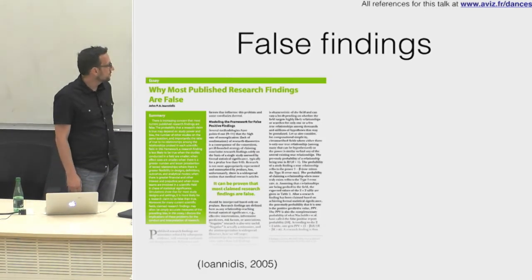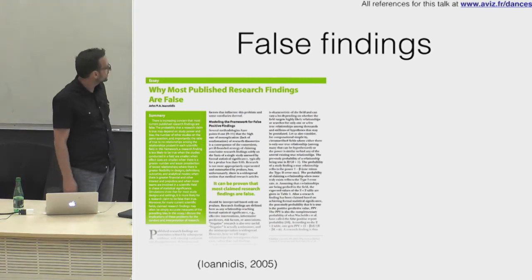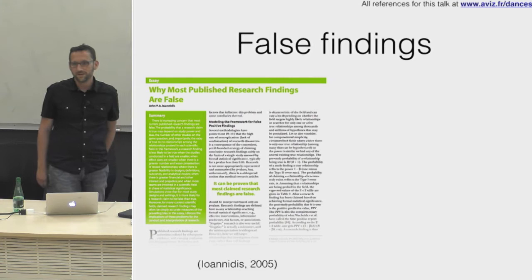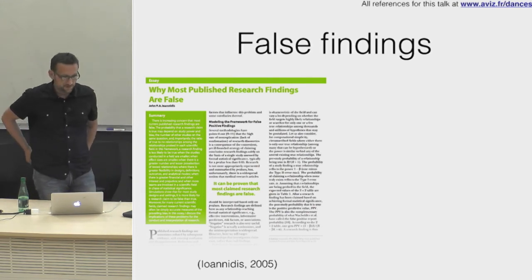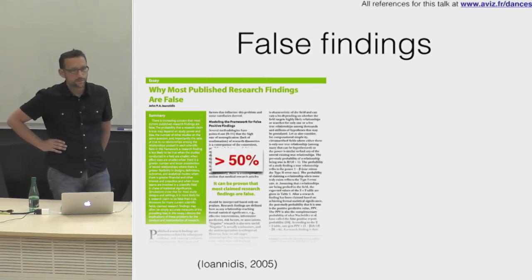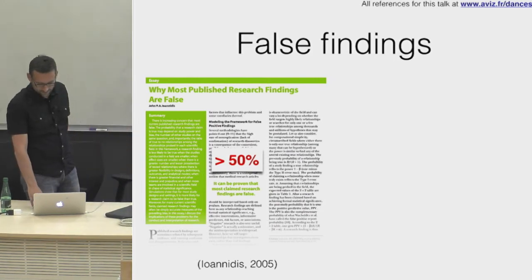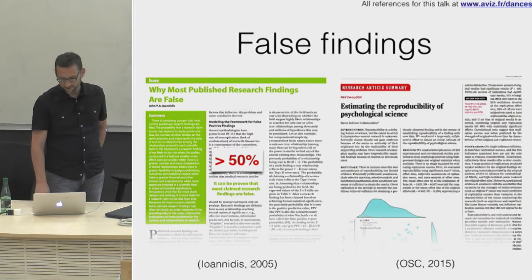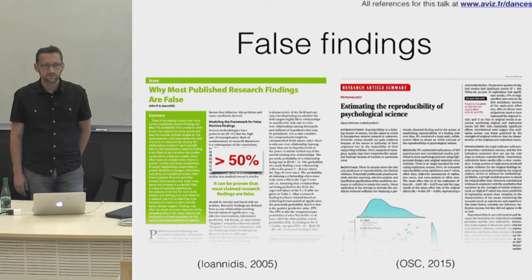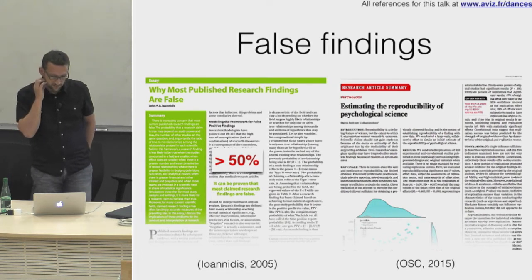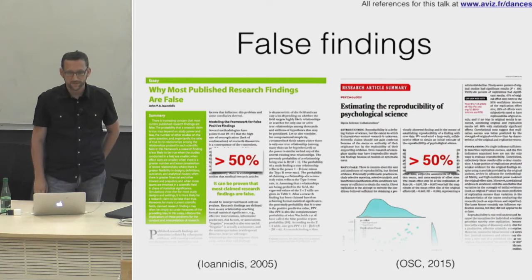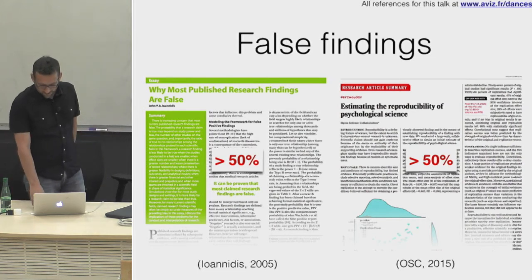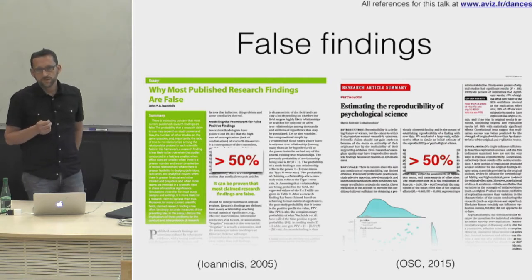We've been knowing this for a while. More than ten years ago there is this famous paper from Ioannidis, which showed that under some reasonable assumptions, probably more than half of all published research in psychology and medicine is probably wrong. This was confirmed more recently where more than 200 scientists replicated 100 psychology studies and found that more than half couldn't replicate — this is sometimes called the replication crisis.